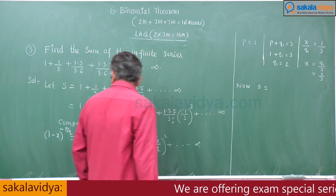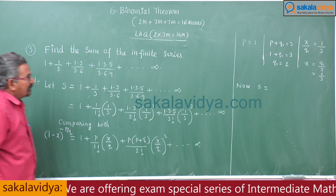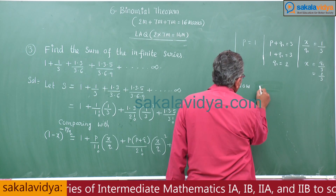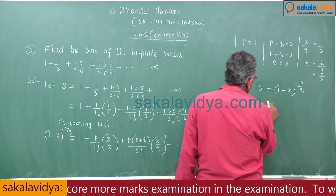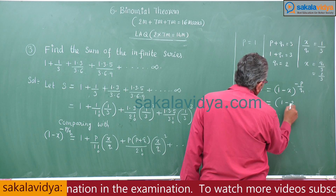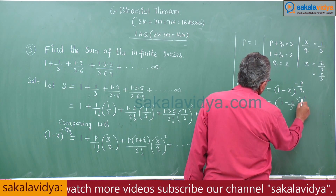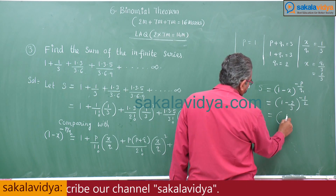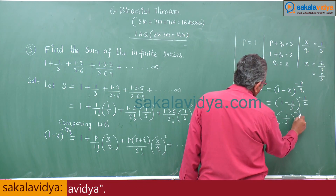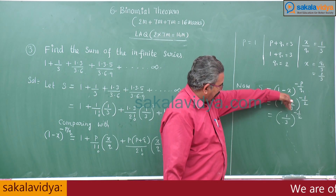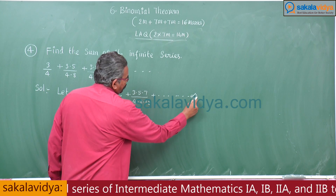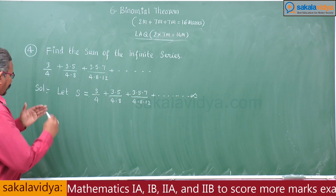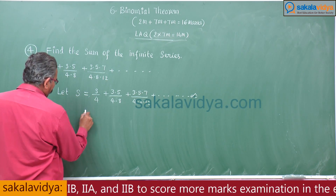So S equals (1 − x)^(−p/q) = (1 − 2/3)^(−1/2) = (1/3)^(−1/2). Since 1/3 = 3^(−1), we get 3^(−1) to the power of −1/2, which equals 3^(1/2) = √3. Therefore, this series sum equals √3. Just observe the steps carefully — very simple, you get 7 marks.